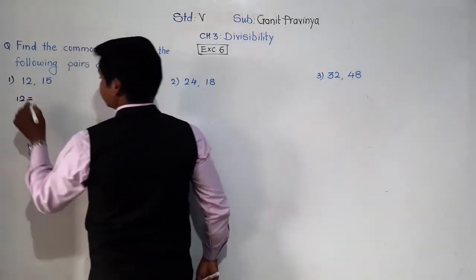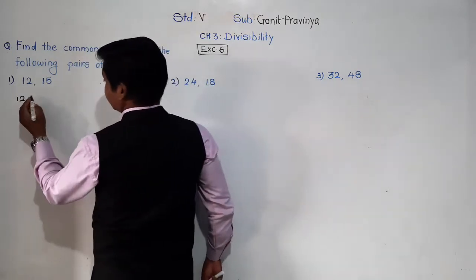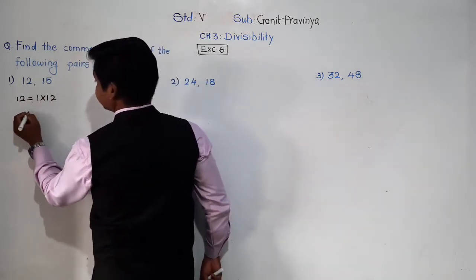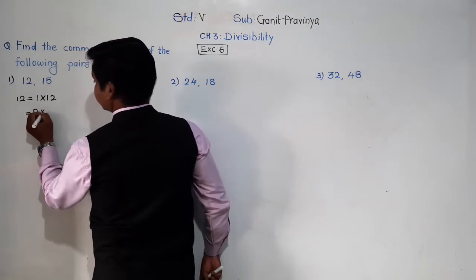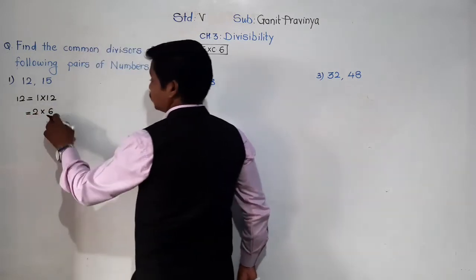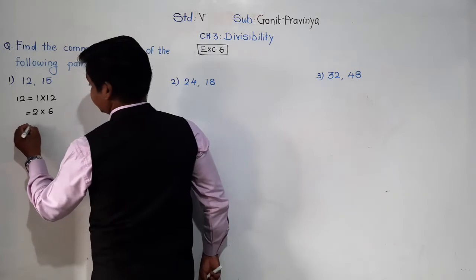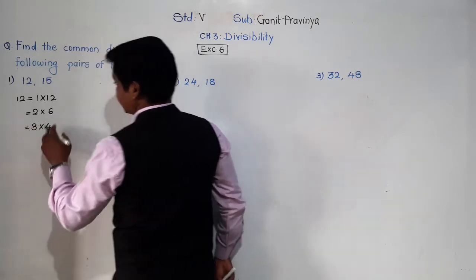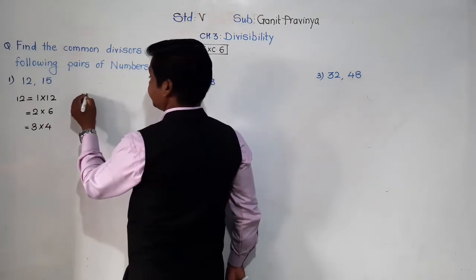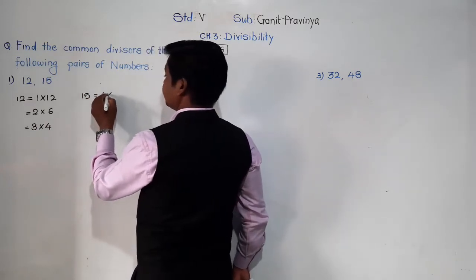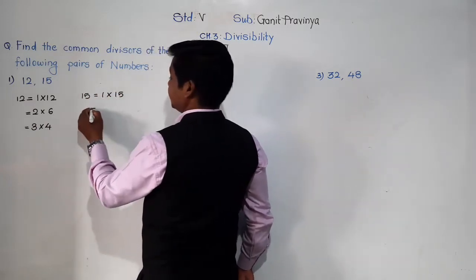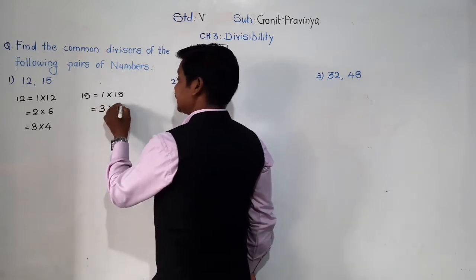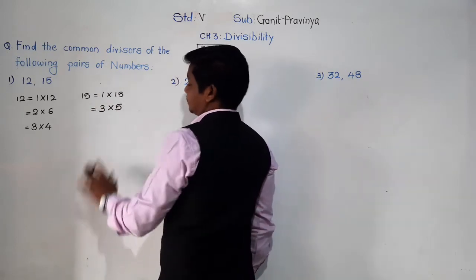So let's find divisors of 12. 12 equals: first there will be 1 × 12, then 2 × 6 is equal to 12, then 3 × 4 equals 12. And for 15: 1 × 15, 3 × 5 equals 15. So let's work with these.